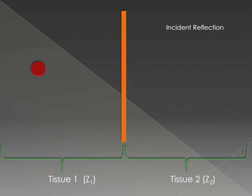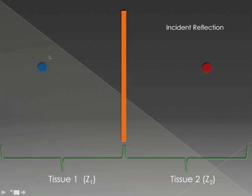Moving on to our next interaction — incident reflection. Tissue one is on one side and tissue two is on the other, and the orange bar represents the interface between the two tissues. Our sound wave is going to pass towards the interface. Once it hits the interface, it's actually going to reflect back a portion of the sound, and also a smaller attenuated portion of the wave is going to continue to propagate forward.